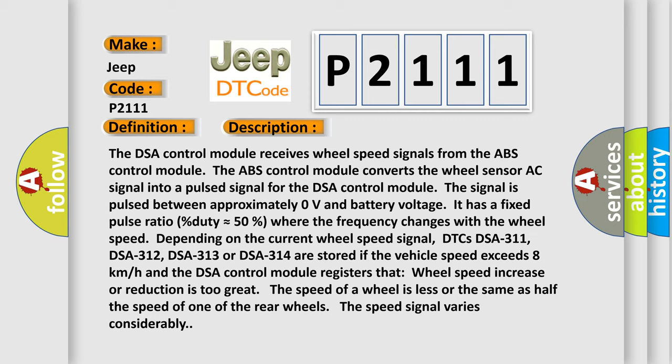Depending on the current wheel speed signal, DTCs DSA-311, DSA-312, DSA-313, or DSA-314 are stored if the vehicle speed exceeds 8 km/h and the DSA control module registers that wheel speed increase or reduction is too great. The speed of a wheel is less or the same as half the speed of one of the rear wheels. The speed signal varies considerably.